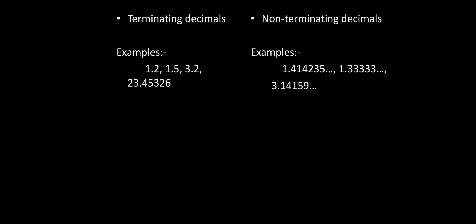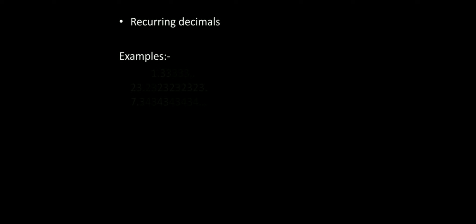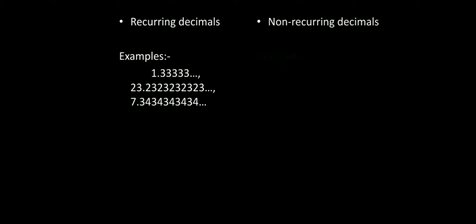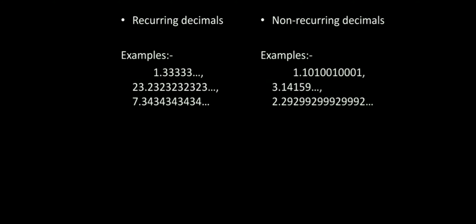Non-terminating decimals — like pi, 3.14159... — don't stop. Now, recurring decimals and non-recurring decimals: recurring decimals are those which recur, meaning they repeat, while non-recurring decimals do not repeat. For example, a recurring decimal is 1.3333... repeating to infinity, while a non-recurring decimal is pi, 3.14159..., which is not repeating and not ending.